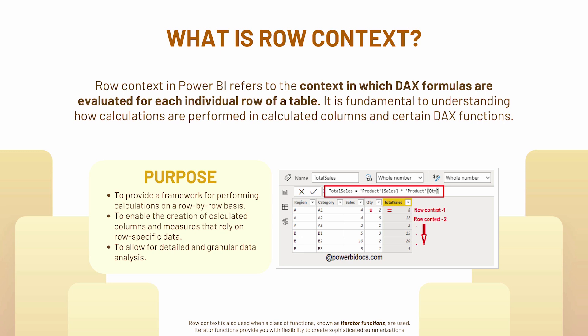The purpose of row context is that it provides a framework for performing calculations on a row-by-row basis. It also enables the creation of calculated columns and measures that rely on specific data, and allows for detailed and granular data analysis. You should also keep in mind that row context is used when iterator functions are used. Iterator functions provide flexibility to create sophisticated summarizations. When you do more practices or reach an advanced stage of Power BI development you would get to know about them too.